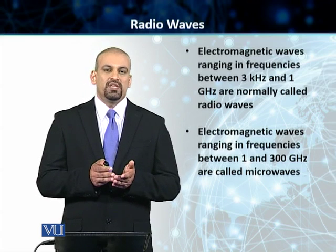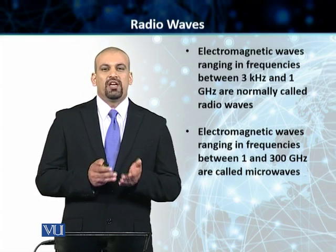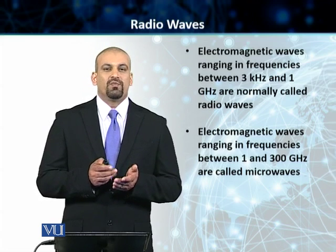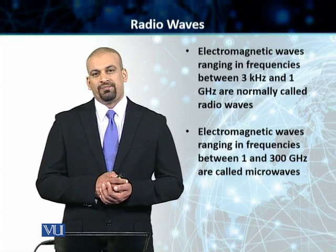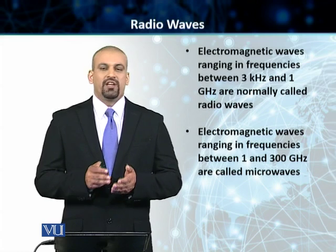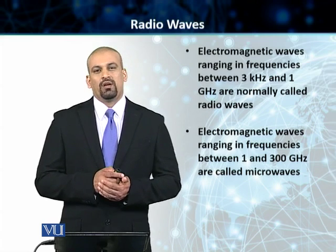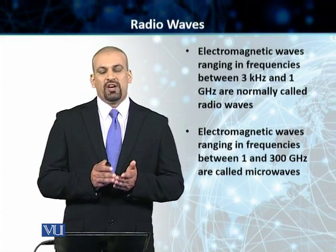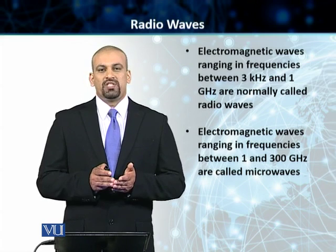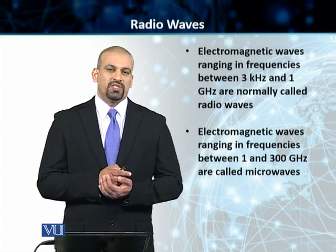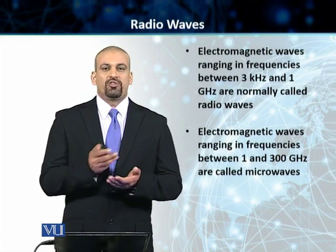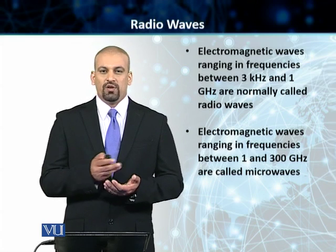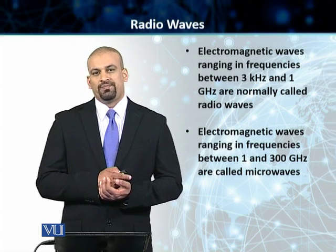At low and middle frequencies, these radio waves can actually penetrate walls, which is both an advantage and a disadvantage. It is an advantage because, for example, when you are using radio waves to receive AM transmission on your radio sets, you can actually have a radio set in the basement of a building and you will still receive transmission.